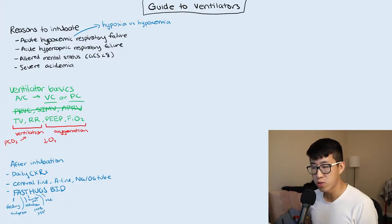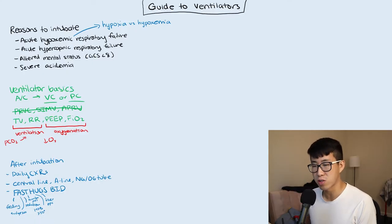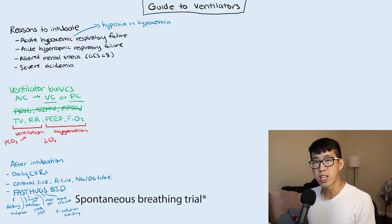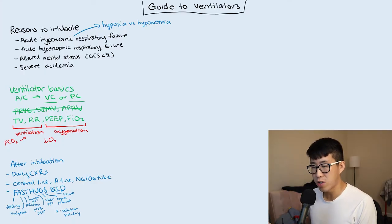U is for ulcer prophylaxis — put the patient on famotidine or pantoprazole to reduce stress ulcers; enteral feeding through the NG tube also helps prevent them. G is for glycemic control, targeting sugars between 140 and 180. S is for sedation holiday — wake the patient briefly every day to assess mental status and help expedite extubation. B is for bowel regimen, since these patients aren't moving much and can become constipated.